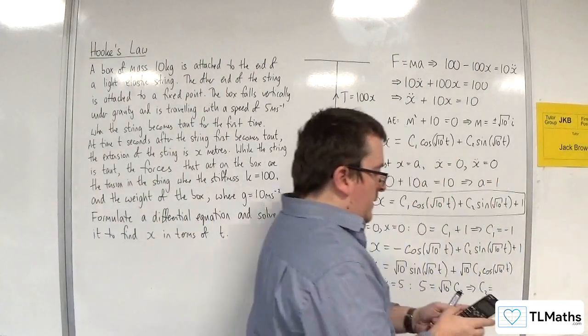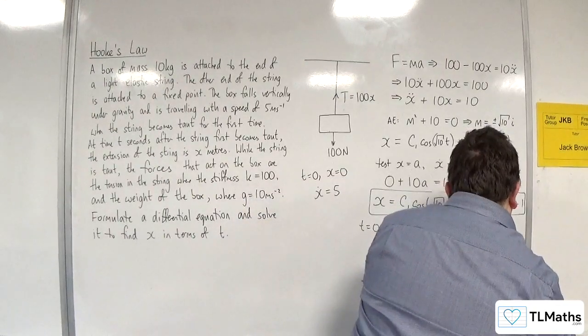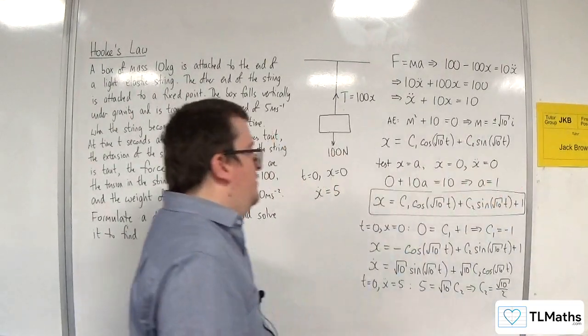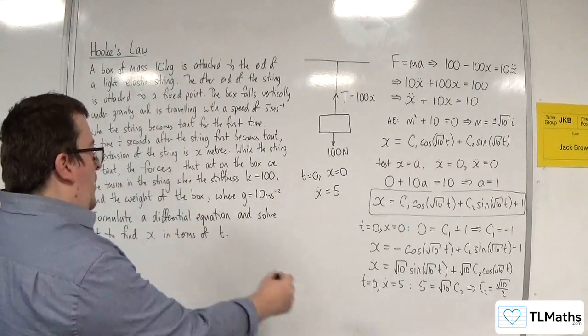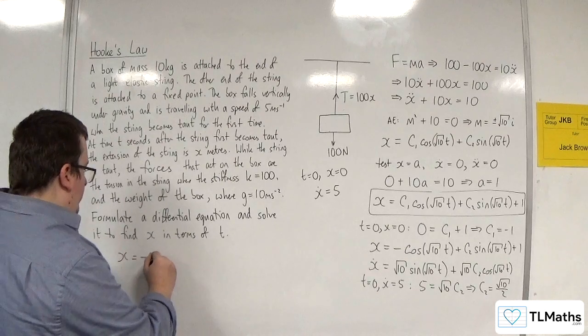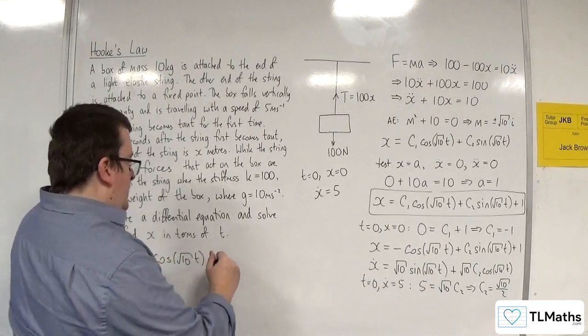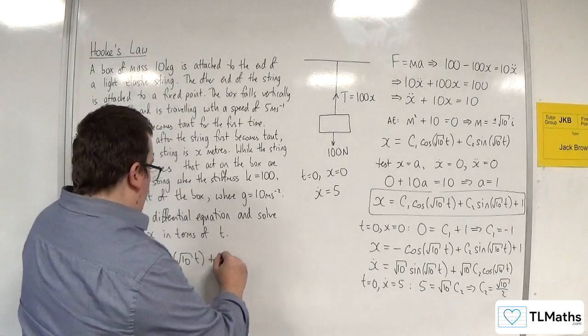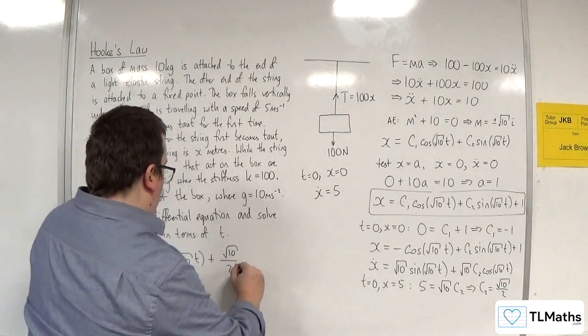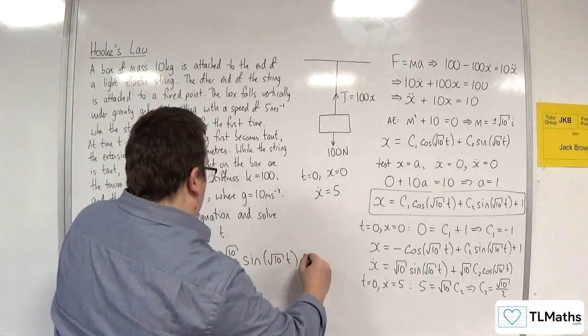Now does that nicely simplify? Root 10 over 2, or half root 10. So we have x is equal to minus cosine of root 10t plus root 10 over 2 sine of root 10t plus 1.